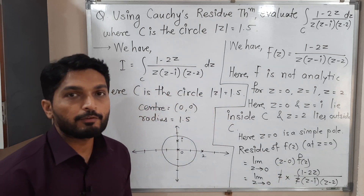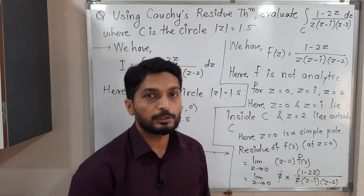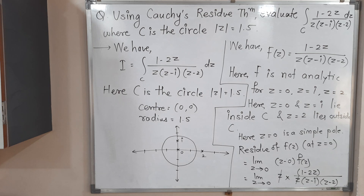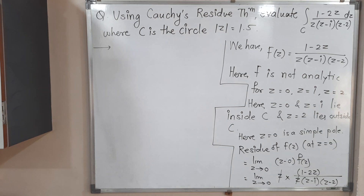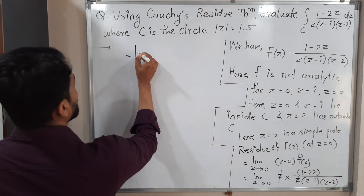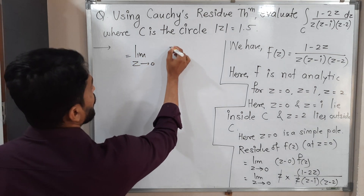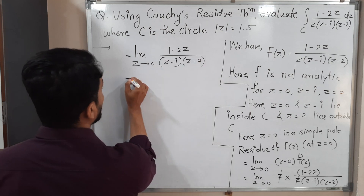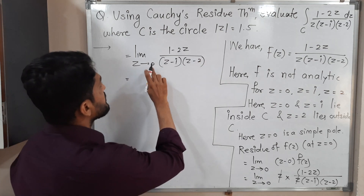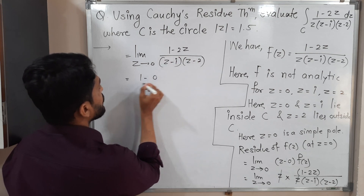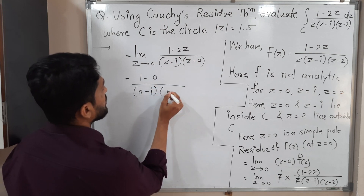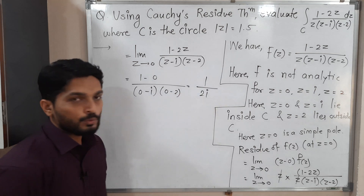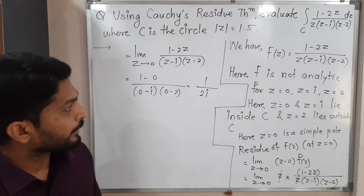After canceling z, we apply the limit by substituting z equal to 0 into the remaining expression (1 minus 2z) upon (z minus i)(z minus 2). This gives (1 minus 0) upon (minus i)(minus 2), which equals 1 upon 2i. So the residue at z equal to 0 is 1 upon 2i.